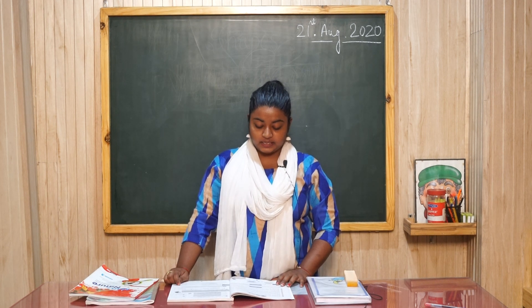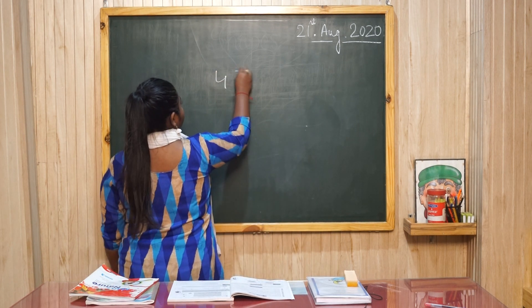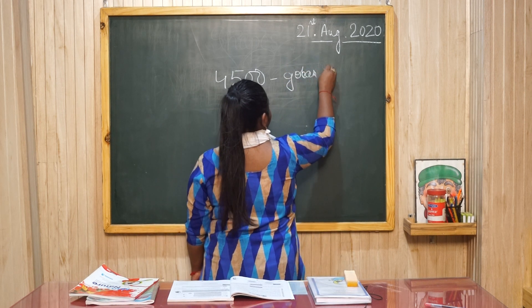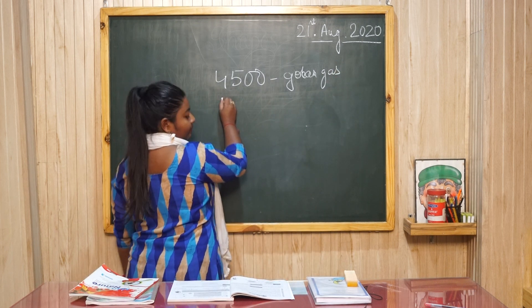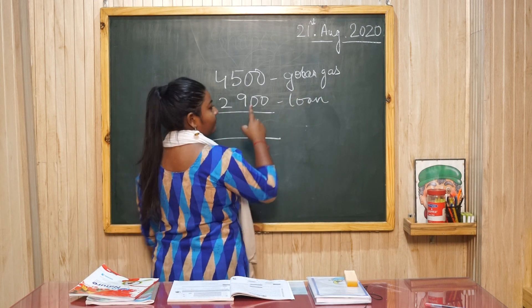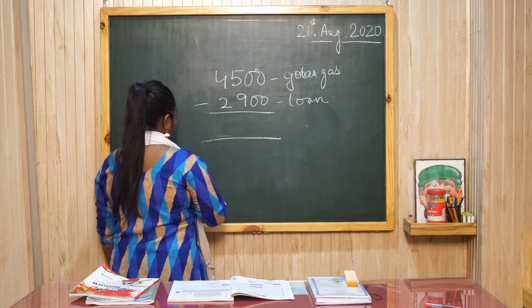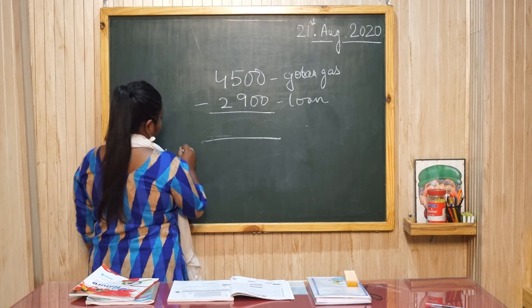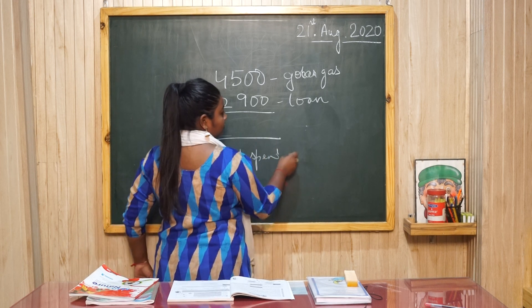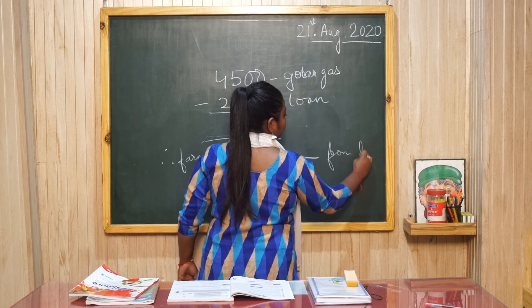A farmer spent 4500 on a Gobar gas plant. He got 2900 as a loan from a bank. How many rupees did he spend from his pocket? He got a Gobar gas plant. And he got 2900 from the bank. So how many is left? You will minus, and what will be the answer you will write. Therefore, a farmer had spent that amount from his pocket.